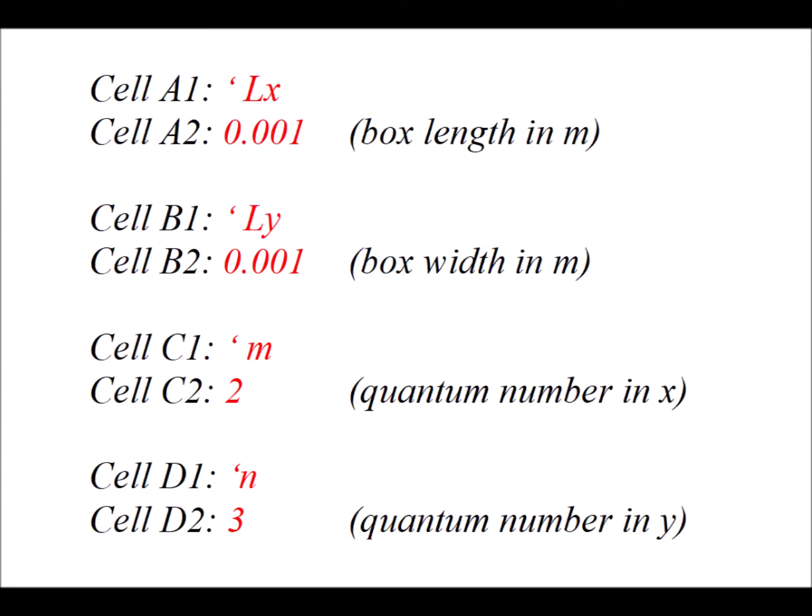We type into cell A1 apostrophe Lx. In cell A2, we put in some box length in meters. Here we have 0.001 for one millimeter. In cell B1, we type apostrophe Ly, the length in the y direction. In cell B2, we put in also a box length, for example 0.001. In cell C1, we put apostrophe M, the label for the M quantum number. In cell C2, we type the number 2. We have to be sure that we type in a positive integer greater than 0.